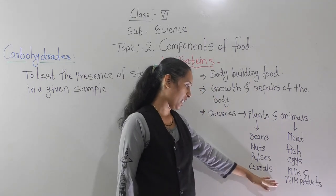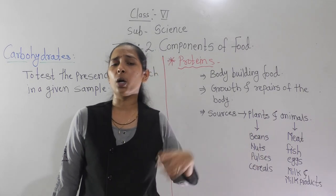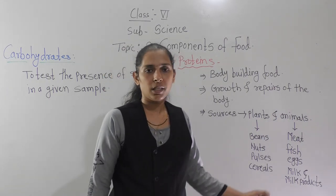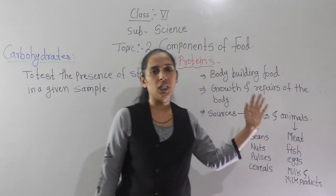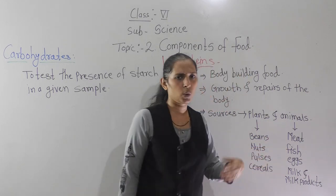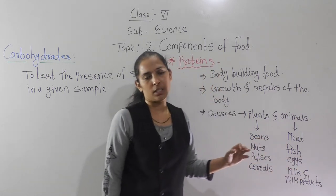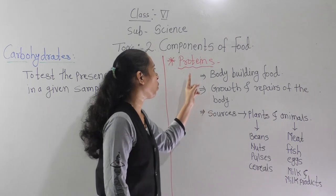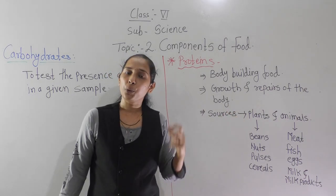Next, the animal sources rich in protein include milk — from goat and other animals — fish, eggs, and milk products. Milk products like curd, cheese, and paneer are also rich in protein. So all these are the sources of protein, from both plant and animal categories.